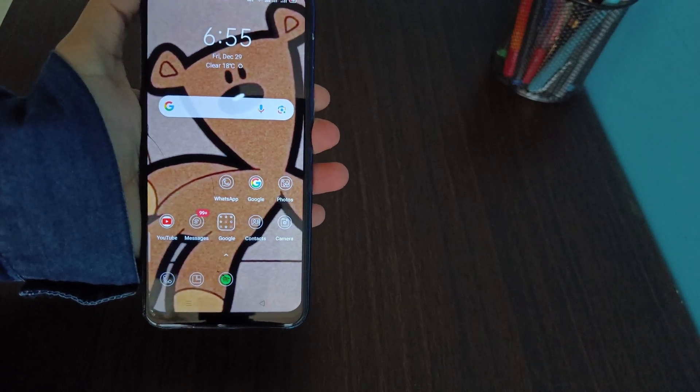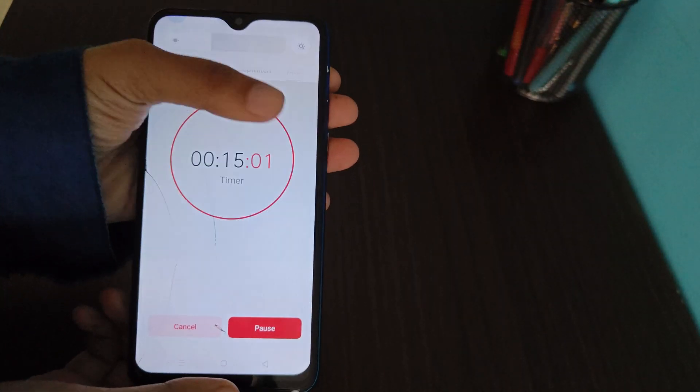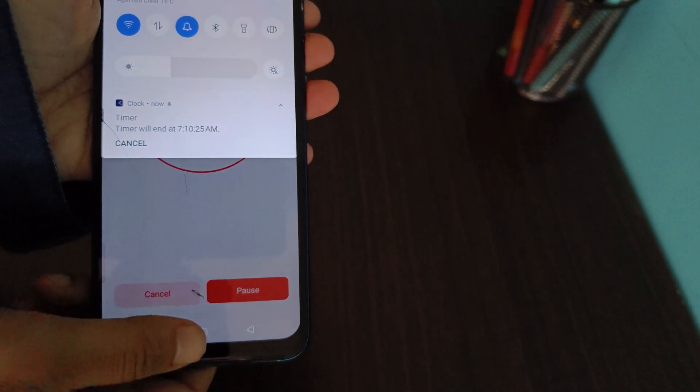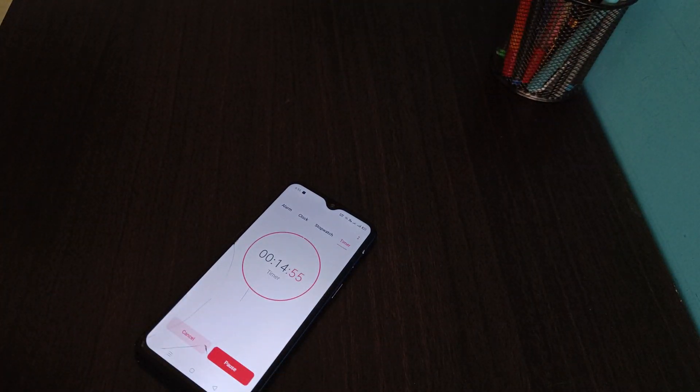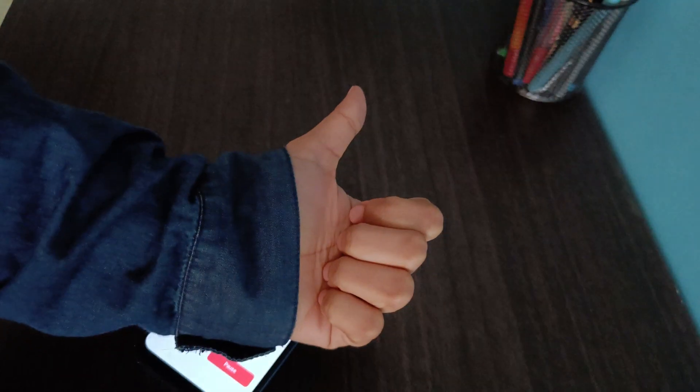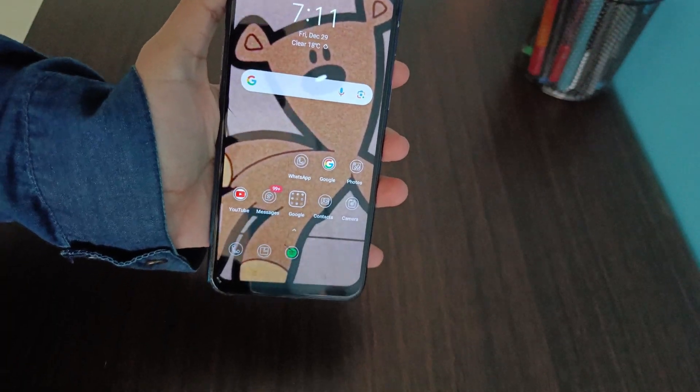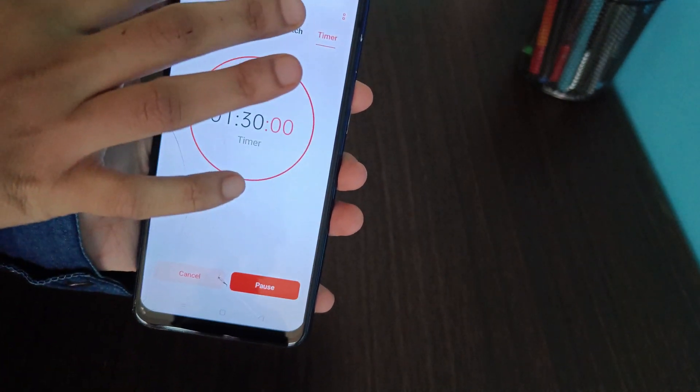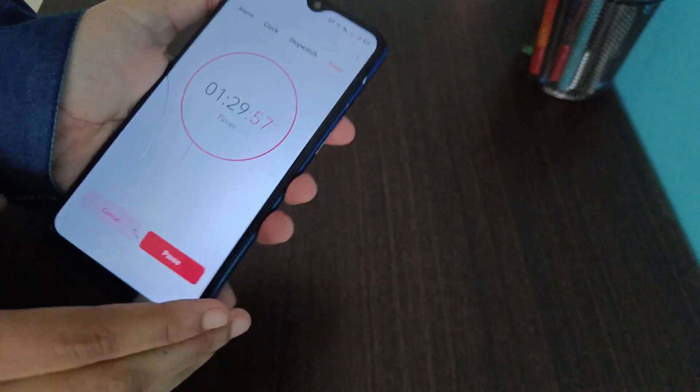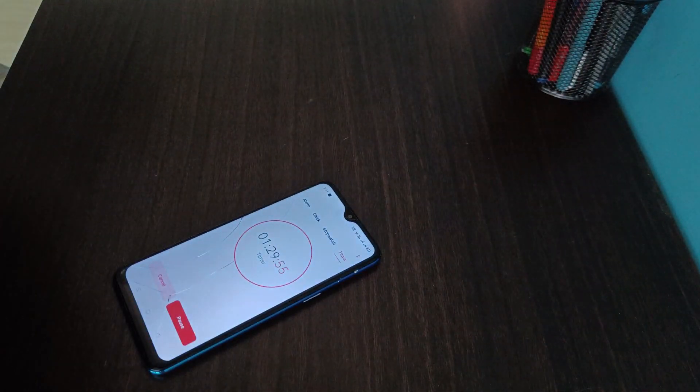It's currently 6:55 right now. I'll take a break of 15 minutes, so this timer will end at 7:10 AM. From 7:10 onwards I'll start practicing maths again for 1 hour 30 minutes. Currently 7:11 AM, let's start practicing maths again.